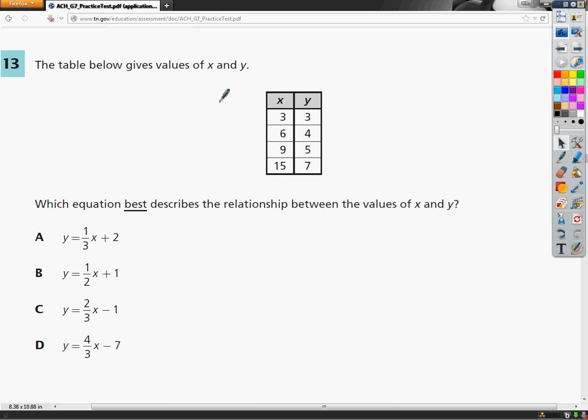The table below gives you values of x and y. They were so convenient to put them in nice little columns for you. Here's the x column, and here's the y column. Which equation best describes the relationships between the values of x and y?